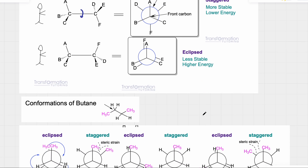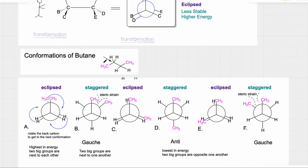With that in mind, we will look at how to draw all of the conformations of butane. This is my butane molecule: carbon 1, 2, 3, and 4. Your teacher will specify which carbons you're supposed to look at. Here we're looking at the carbon 2 to carbon 3 bond. Carbon 2 will be our front carbon — we ask what three groups it is attached to, not counting the carbon behind it. This carbon is attached to two hydrogens and a methyl. I'll draw methyl and two hydrogens, and I am choosing to start with the eclipsed conformation.